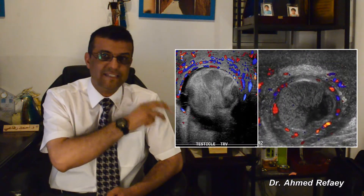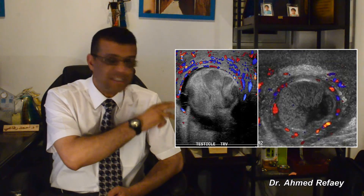Other ultrasound features in cases of testicular torsion include reactive hydrocele and thickening or edematous wall of the scrotum. In cases of neglected torsion, the torsion testes will be heterogeneously hypoechoic with peripheral hypervascularity due to development of peritesticular inflammatory reaction, as seen in these images.